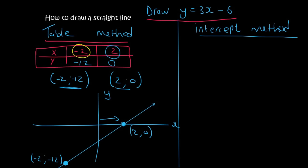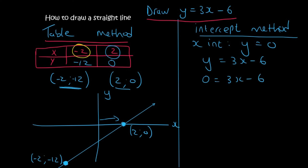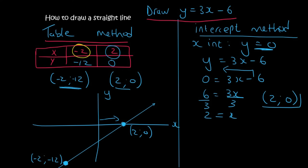Now we use the intercept method. We need to find the x-intercept, so we make y equal to 0. Writing down the equation y equals 3x minus 6, we make y equal to 0 and solve for x. We take the minus 6 over so it becomes positive, giving us 6. Then divide both sides by 3 and so x is 2. When y is 0, x is 2, so there is our x-intercept point.